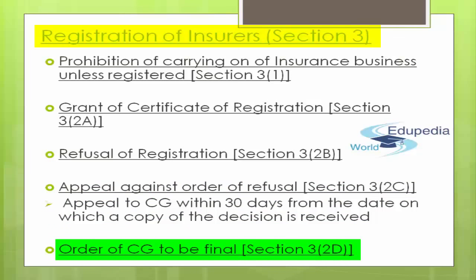Under Section 3(2d): Order of CG to be final. If you have made an appeal to the Central Government, whatever decision the Central Government takes will be binding and final—it cannot be questioned in any court. The decision of the Central Government on such appeal shall be final and shall not be questioned before any court. This covers the first half of the provisions on registration of insurers.